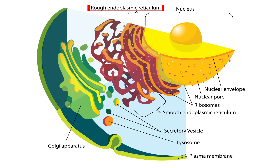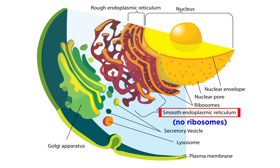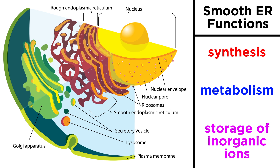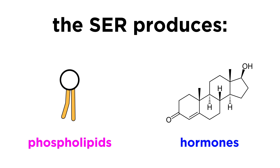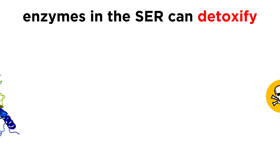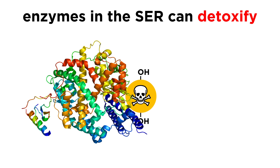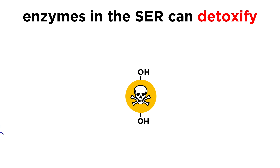The rough ER is connected to the smooth ER, which is different in that it is not studded with ribosomes. It also has a wider variety of functions, like synthesis, metabolism, and storage of calcium ions to be used for signaling. The smooth ER produces phospholipids and steroids like sex hormones. Enzymes in the smooth ER can detoxify drugs and poisons by adding hydroxyl groups to enhance water solubility, and flush them from the body.